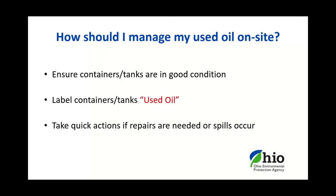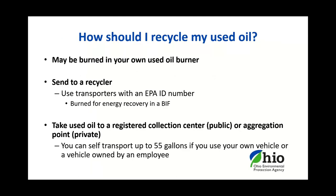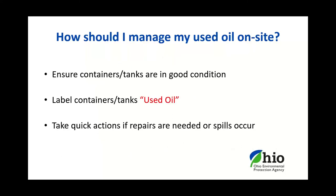Ohio's regulations include specific requirements for used oil generators, most relating to good housekeeping practices. You must label containers or tanks of used oil with the words 'used oil.' Store used oil in containers or tanks that are in good condition — not rusting, not leaking. If there is a leak of used oil, stop the leak, contain it, clean it up, and properly manage the cleanup materials. You must use a transporter with an EPA identification number when shipping used oil off-site. Used oils must not be mixed with other wastes such as mineral spirits, brake cleaner fluid, or washer solvents unless you are sure that you are complying with the appropriate regulations.